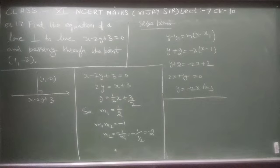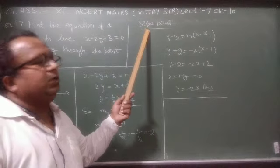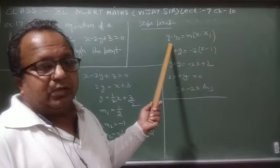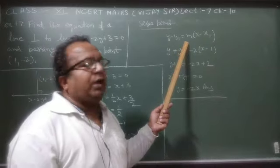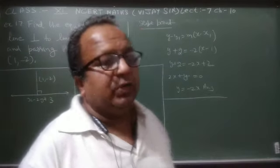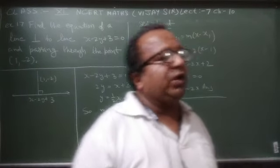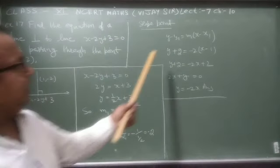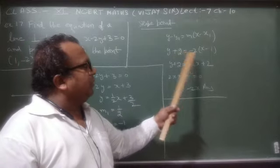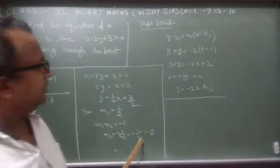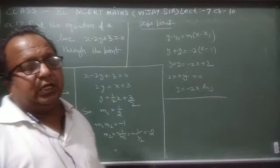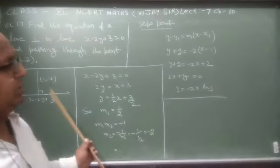Slope m2 = -2 और point (1, -2) से pass होती है। Point-slope form use करते हैं: y - (-2) = -2(x - 1), यानि y + 2 = -2x + 2, इसे simplify करने पर required equation मिलती है जो इस line पर perpendicular है।